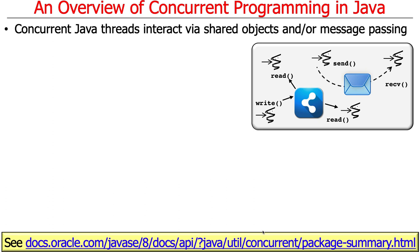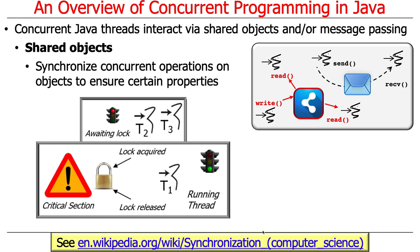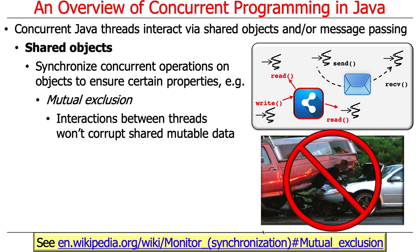There are two general ways that threads can interact. One is by using shared objects, and the other is by using message passing. Shared objects are used to synchronize the behavior of one or more threads so that certain properties are preserved, and we typically do this with various kinds of synchronizers or locks. The purpose is to ensure that only one thread at a time is accessing the resources of an object within its so-called critical section. Other threads that need to access those resources are blocked, awaiting their turn.